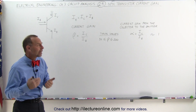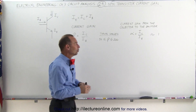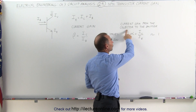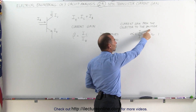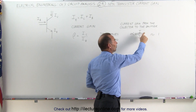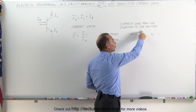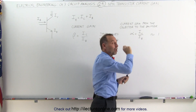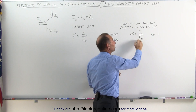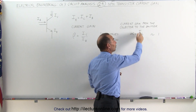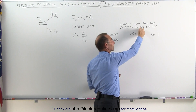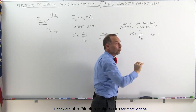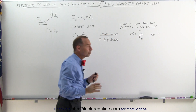We have a different kind of current gain as well: alpha, where we compare the collector current to the emitter current. Since the collector current plus a small base current adds up to the emitter current, the ratio of the collector current to the emitter current is always equal to a number very close to 1.